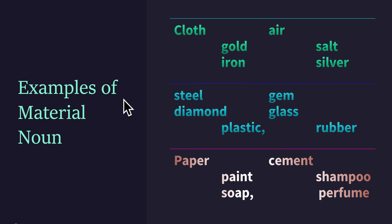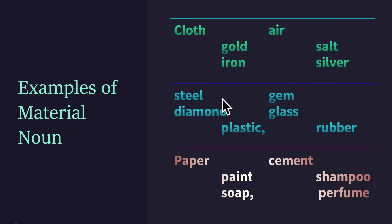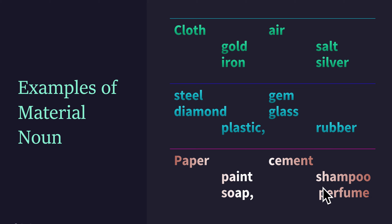Examples of material noun: cloth, air, gold, iron, salt, silver, steel, gem, diamond, glass, plastic, rubber, paper, cement, paint, shampoo, soap, perfume. These are the examples of material noun.